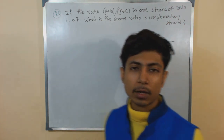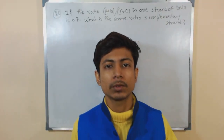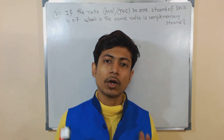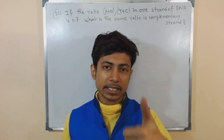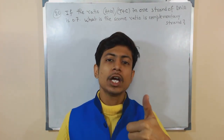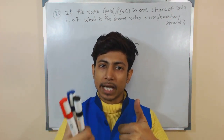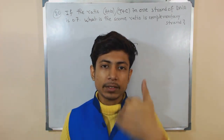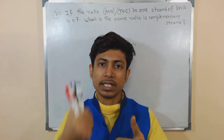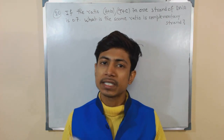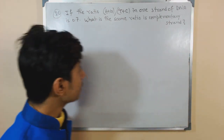To answer this, we simply need to know the complementarity of DNA. If adenine is present in one strand, in the opposite strand there will be thymine. If cytosine is present in one strand, in the opposite strand there will be guanine. If you know this, you can answer this.